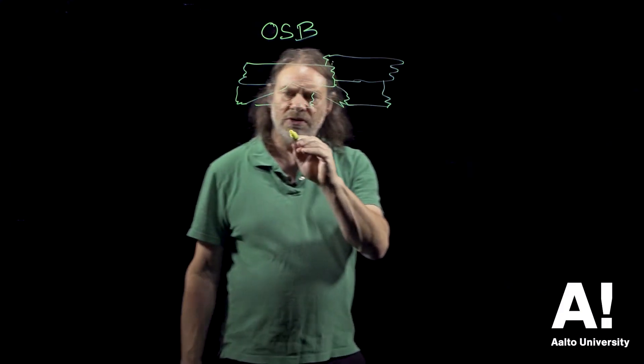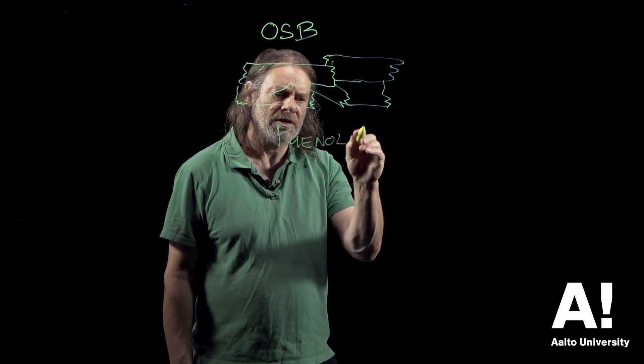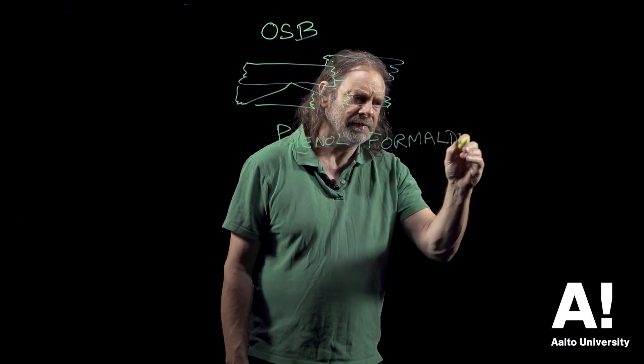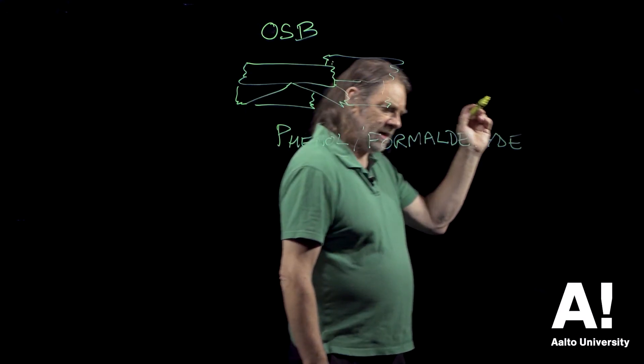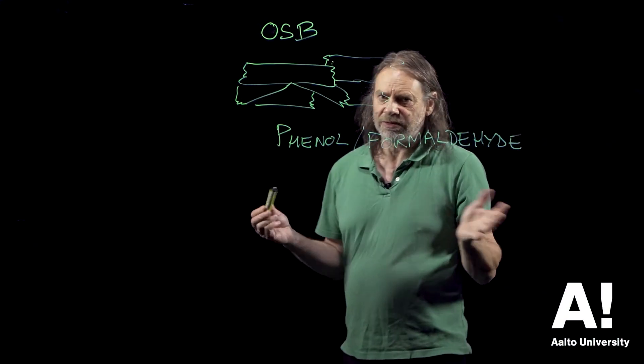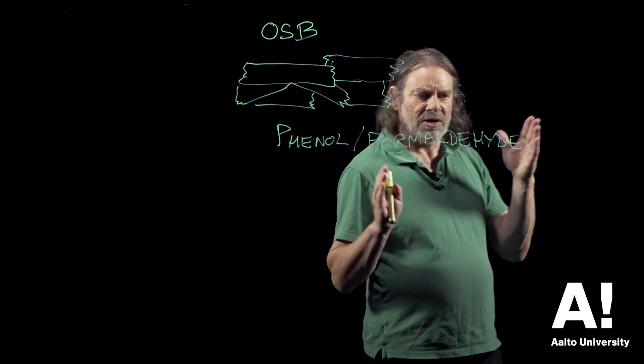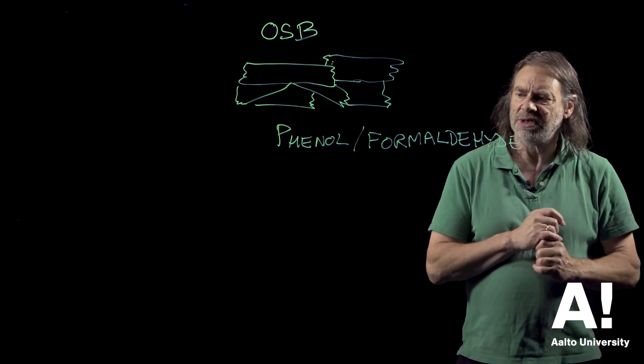We use phenyl formaldehyde resin which is sprayed onto the surface of flakes, and the board is pressed. We end up with oriented strand board as a consequence. That will then be sawn to length, sawn to width, and the surface may or may not be sanded.